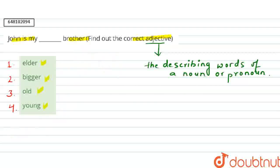And yaha pe hamara noun kya hai, yaha pe hamara noun hai brother. Brother is here noun and is ke liye hamein a describing word hona hai that is most suitable. So let's check the options one by one.